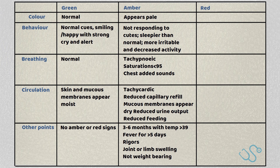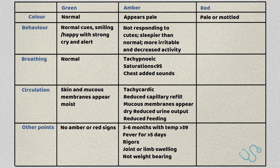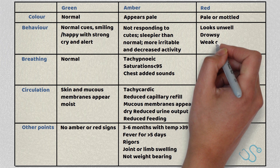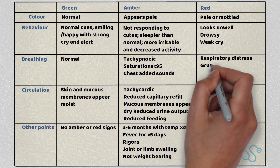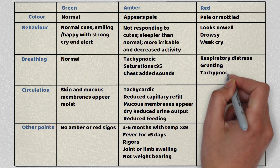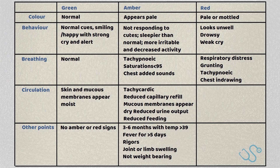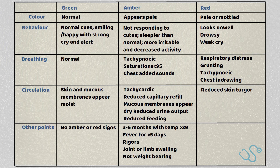A child deemed red would look pale or mottled. They'll look seriously unwell — they might be drowsy or have a very weak cry. Breathing-wise, they might be in respiratory distress with some grunting, tachypnoea or chest in-drawing. From a circulation viewpoint, they may look dehydrated or have reduced skin turgor.